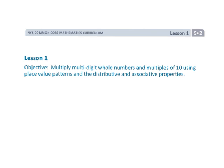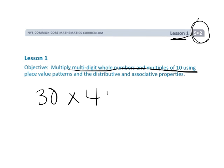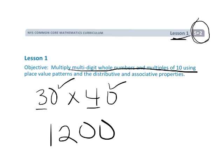All right, this is 5th grade, module 2, lesson 1. In this lesson we're going to be multiplying multi-digit whole numbers and multiples of 10. We're talking things like 30 times 40, and we're not just going to teach a trick—oh, 3 times 4 is 12, then add two zeros. No, we're not going to simply teach the trick.